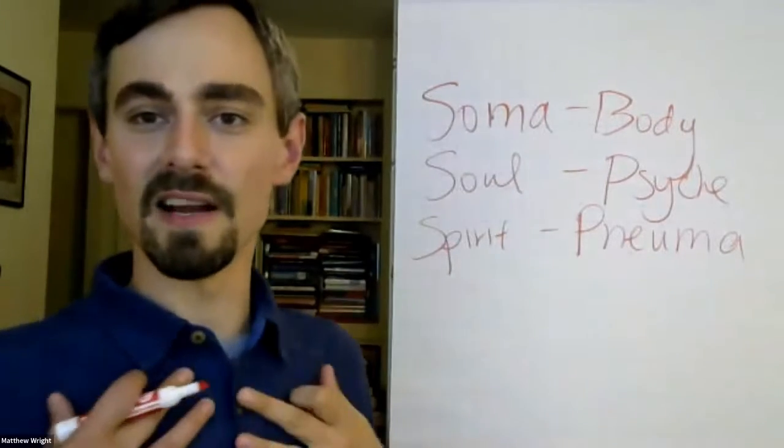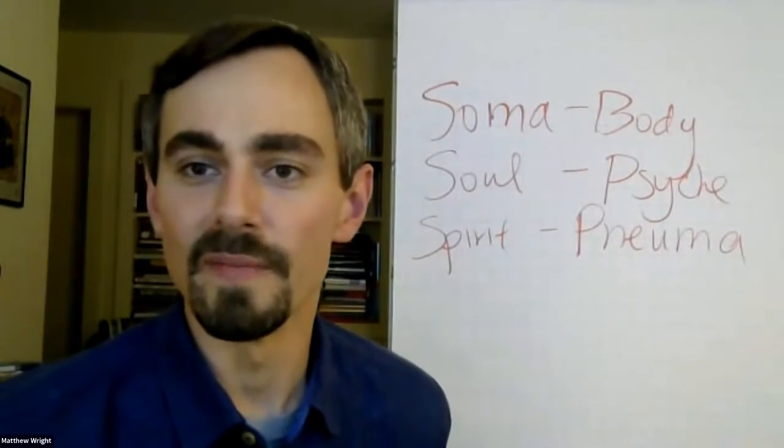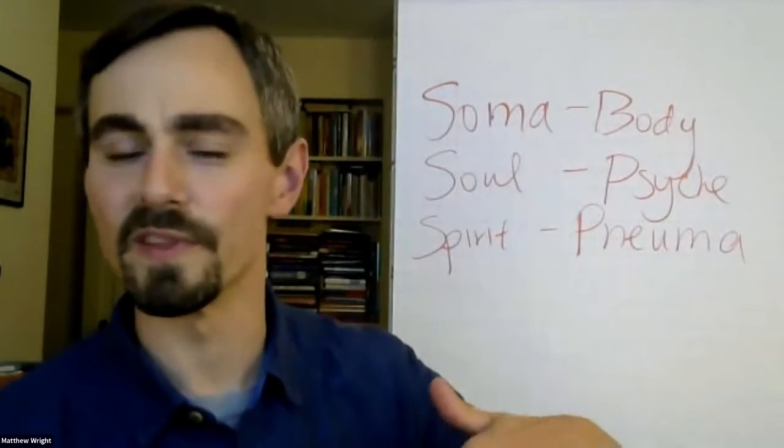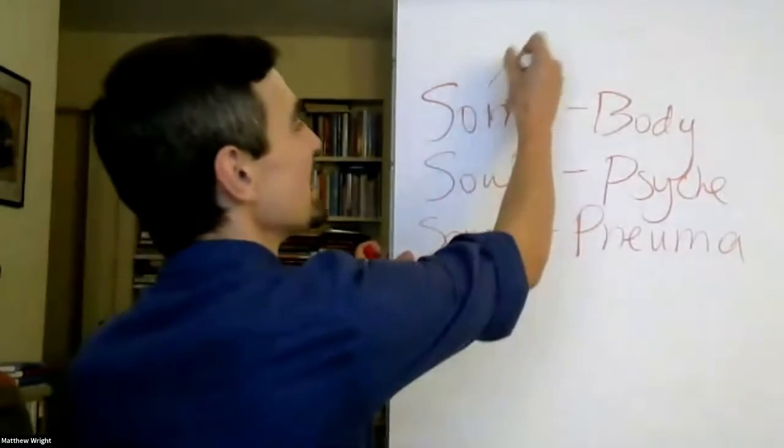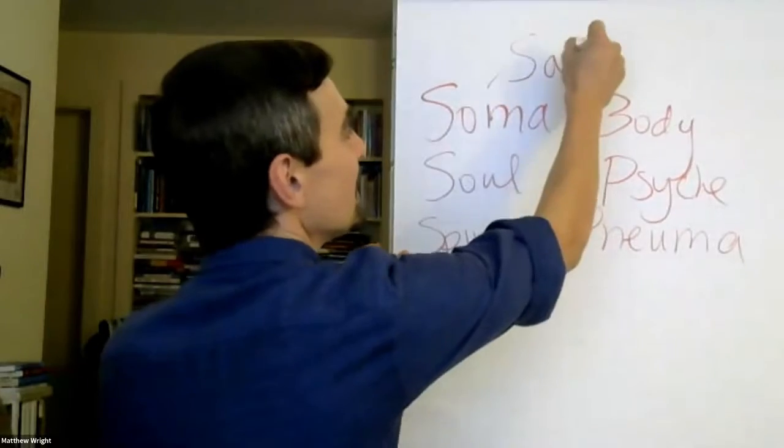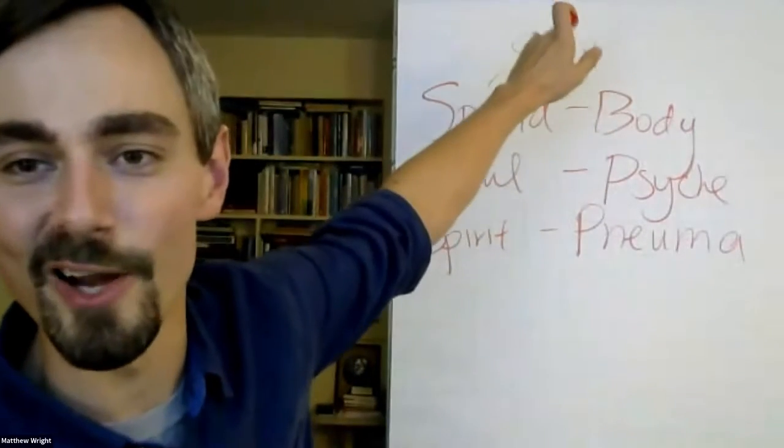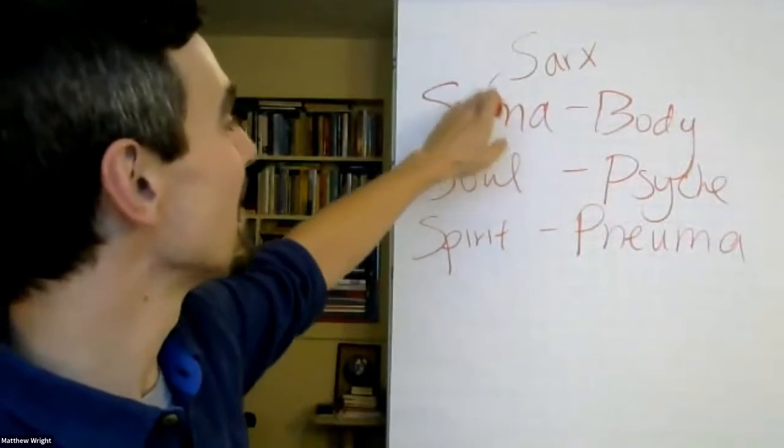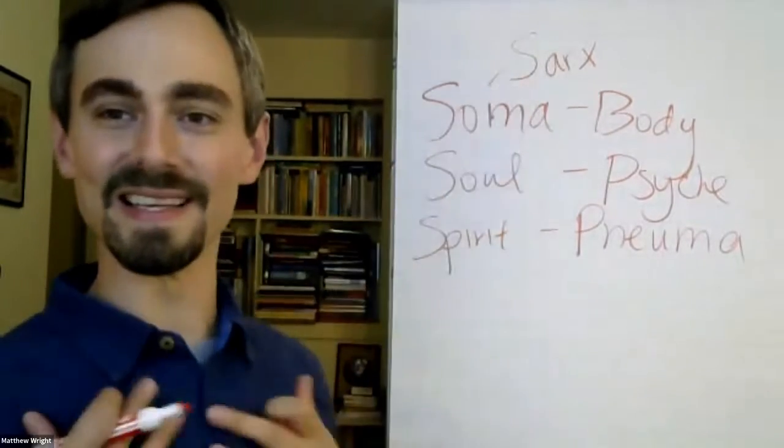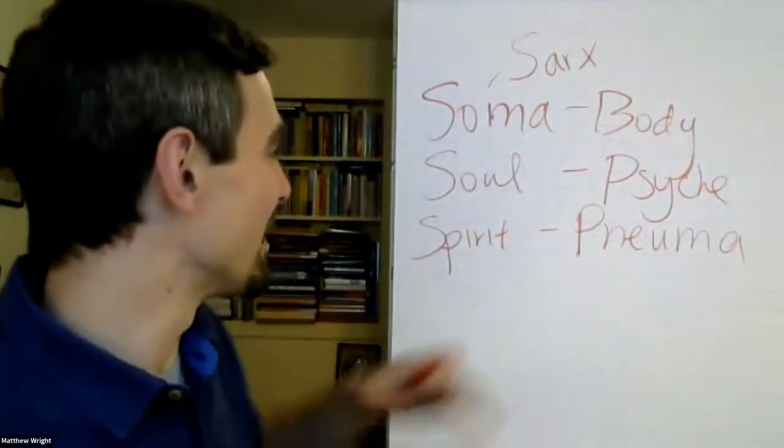And soma is our physical body. When Paul talks about the flesh being at war with the spirit, he doesn't use soma. In those cases, he uses the word sarx, which I think we better translate as ego rather than flesh. It's really the ego. But soma, the body is good. Soma is the physical embodiment of who we are.